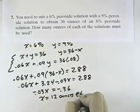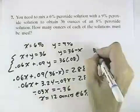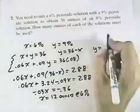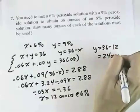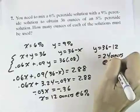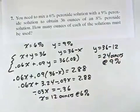So it's 12 ounces at 6%. Going back here, we had y equals 36 minus, in this case, the x, which was 12, is 24 ounces, and that 24 ounces is the 9% solution. Thank you.